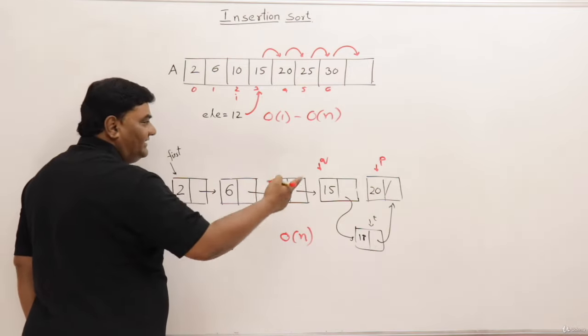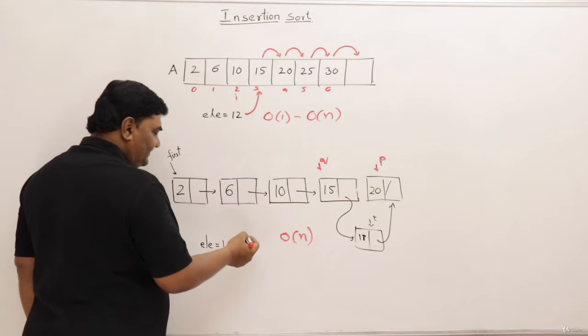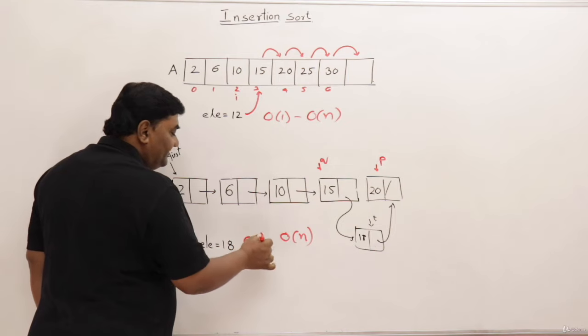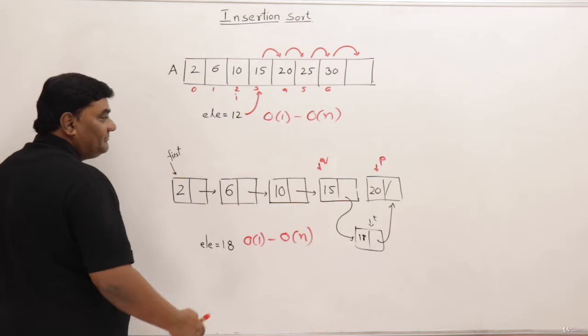So it may either traverse all n elements or just one element. So it may be inserted before 2 also, right? So time may be minimum constant, maximum n.